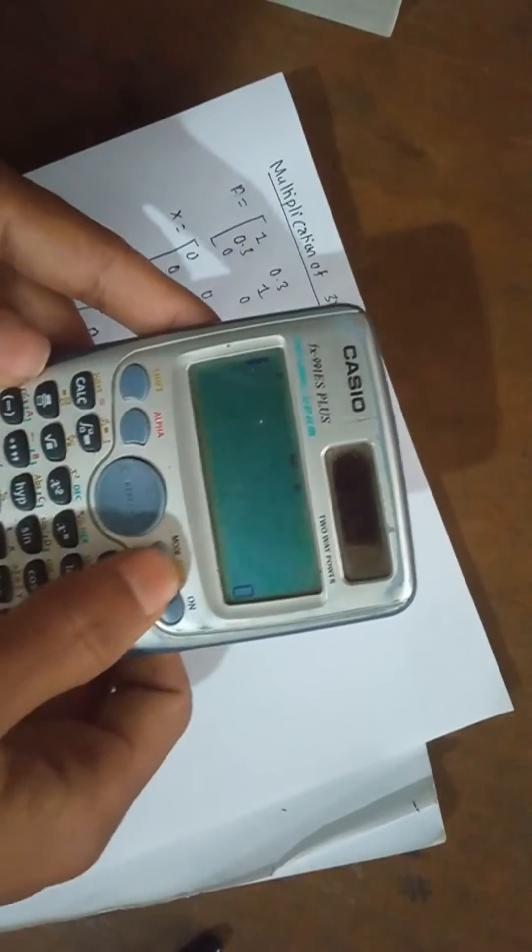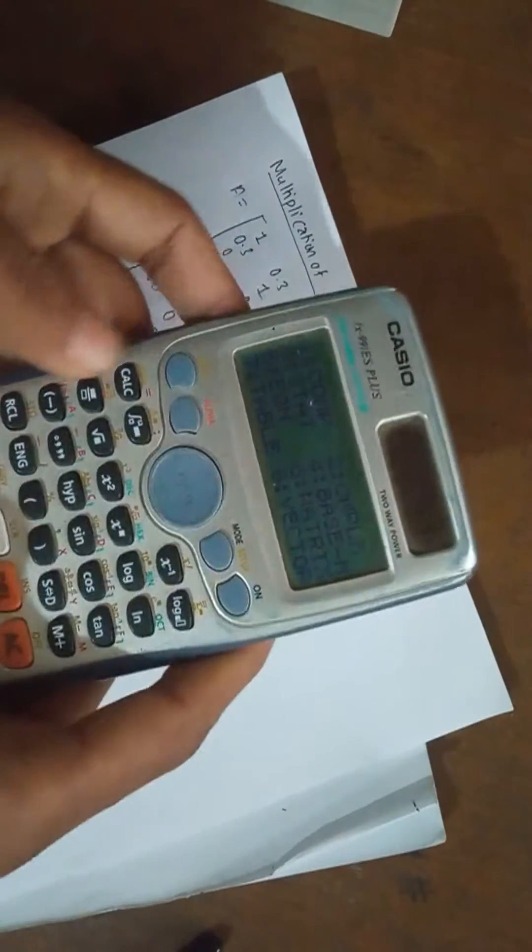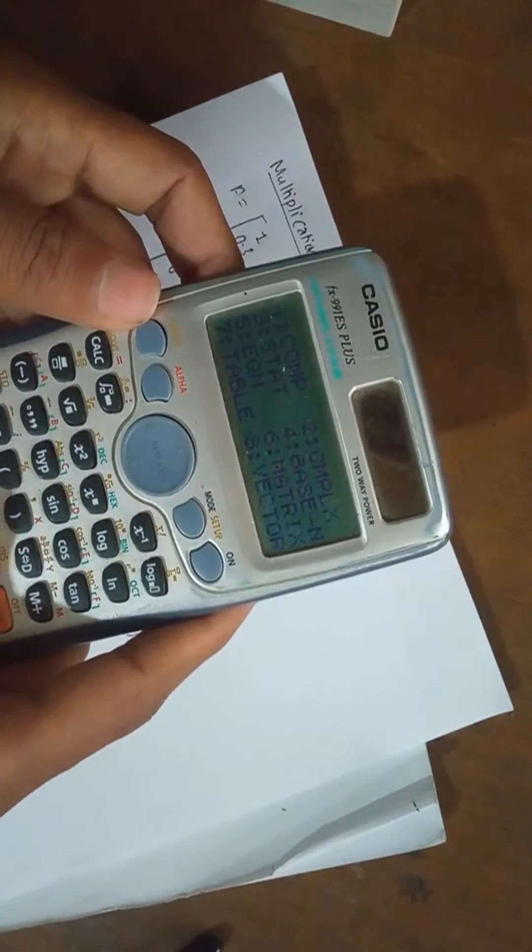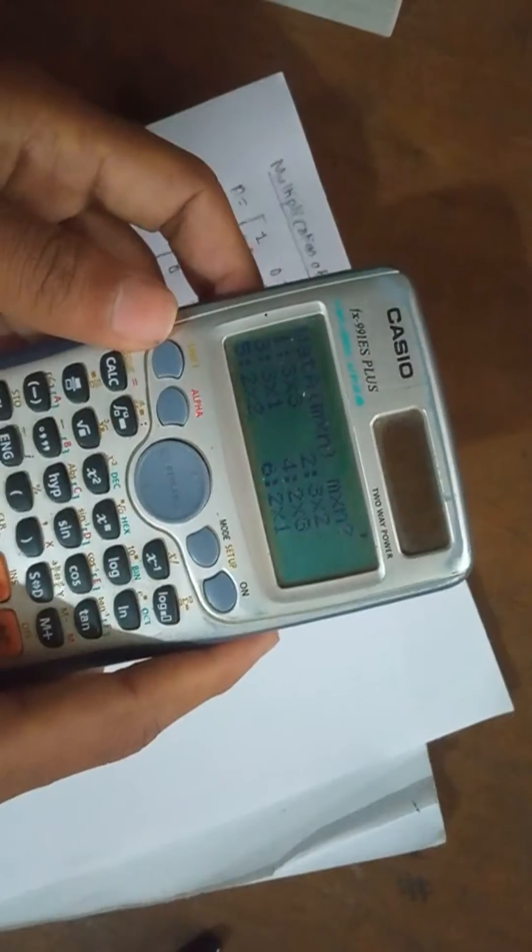Now let's start. This is the calculator. Press setup, then press 6, then 1, then 3.